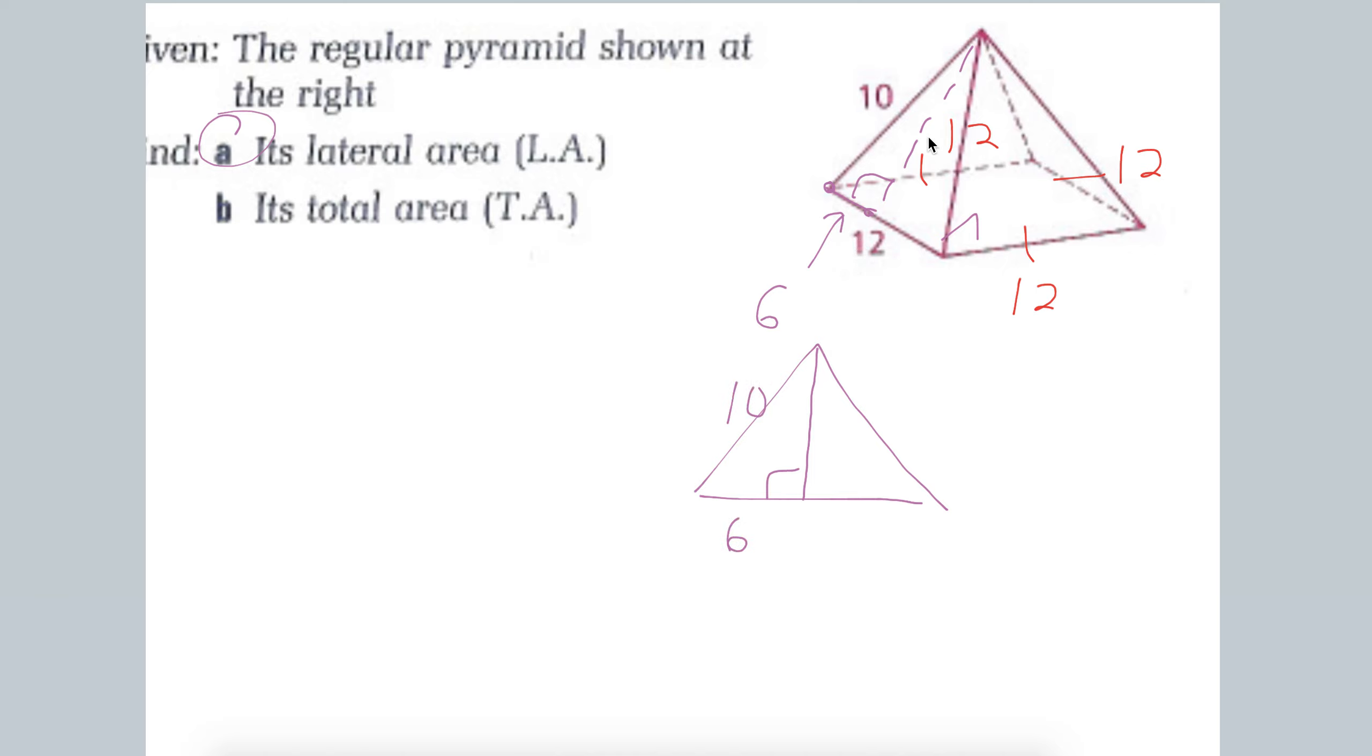This lateral edge was 10. And so this slant height that we're looking for, if you notice, has to be 8 because it's a 3, 4, 5 multiple of a triangle.